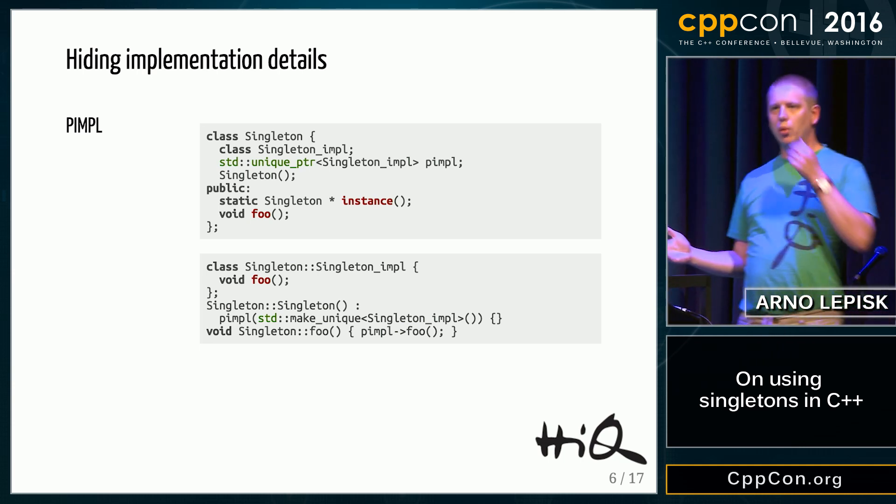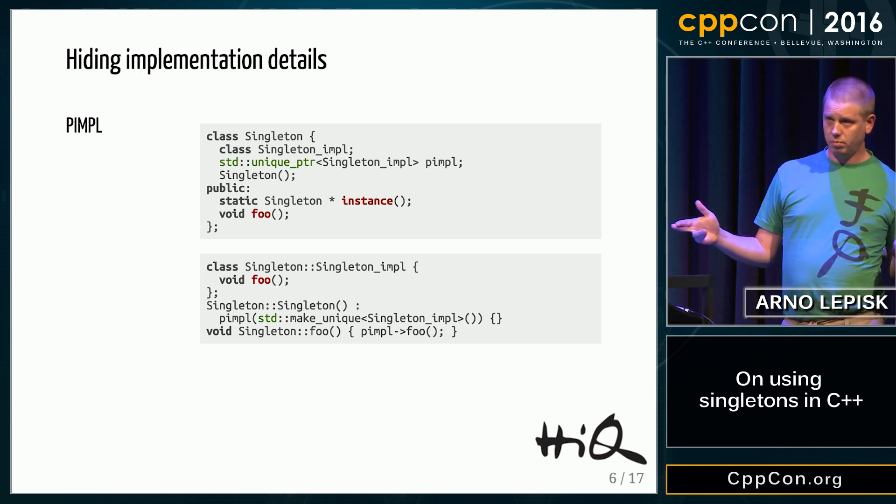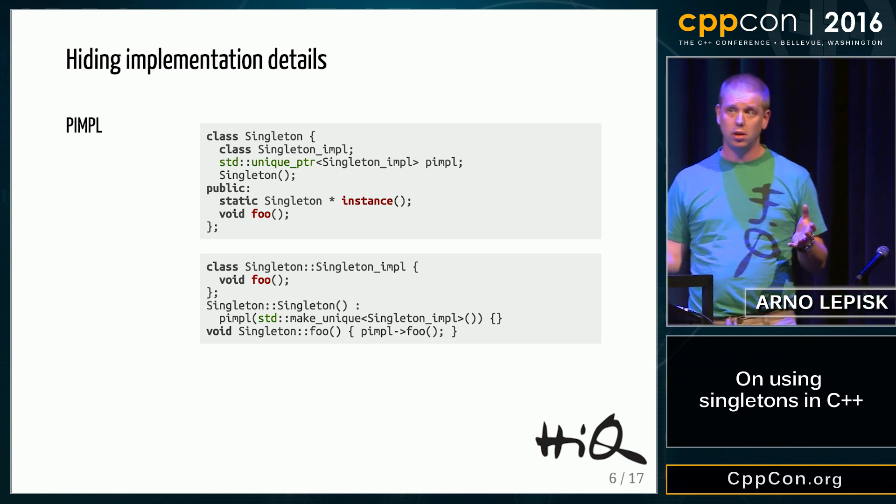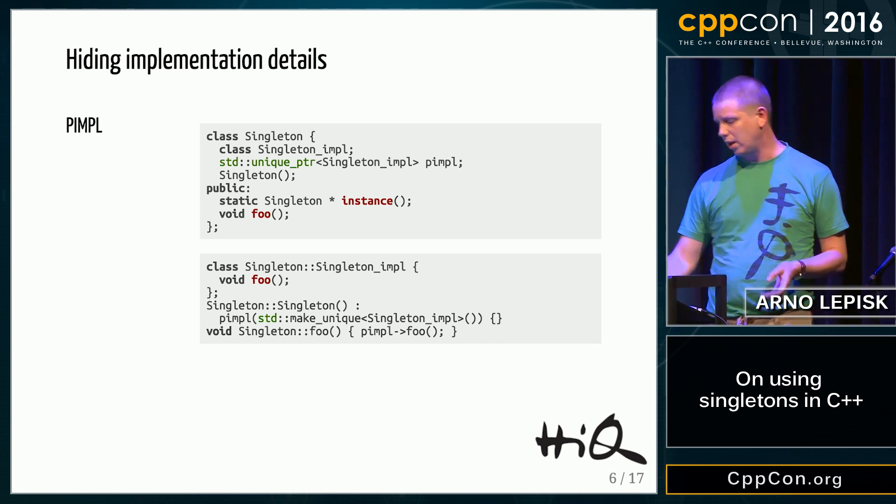One way of getting around this is to use a PIMPL approach. You have a private implementation class that you use to hide the implementation.